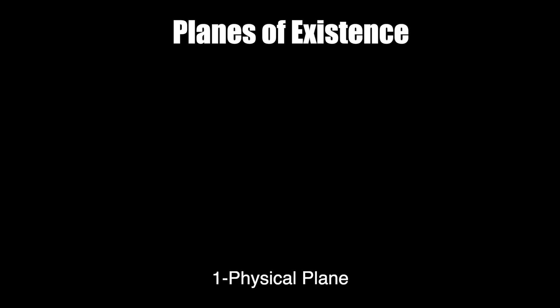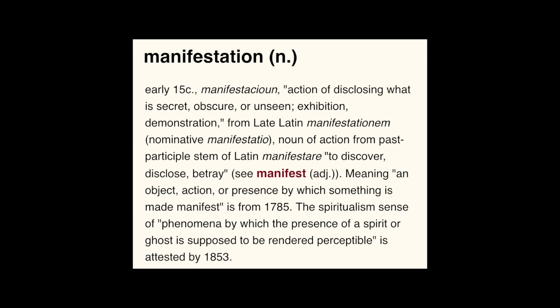Beneath and beyond the atom is ether — things without what you know as form — on your seven realms of existence, which is really nine to those who know. The first being the physical plane in which we reside, the second is the plane of force, which is the energies that make up what you call nature. These two planes identify some form of manifestation. The word manifestation here is key, for it etymologically means to reveal what is secret.